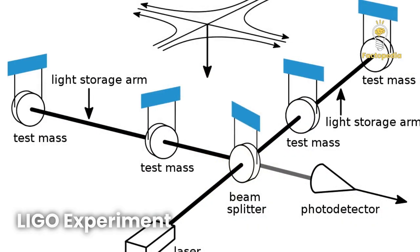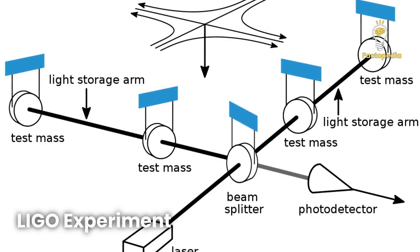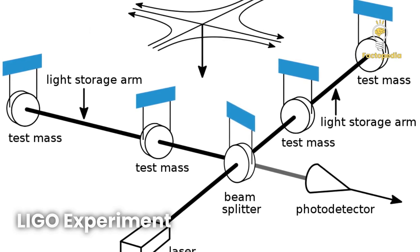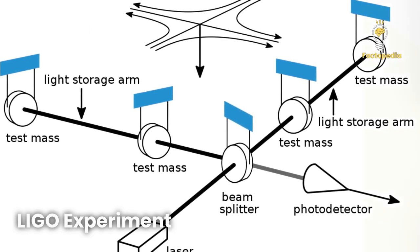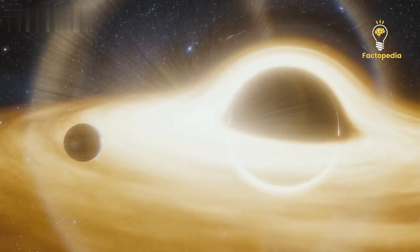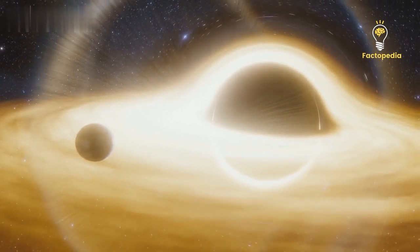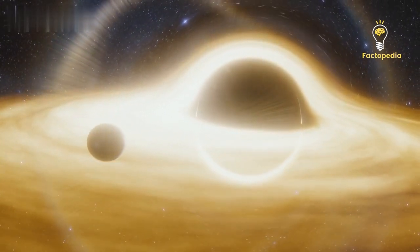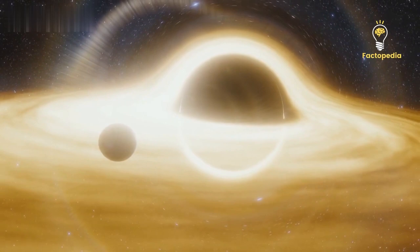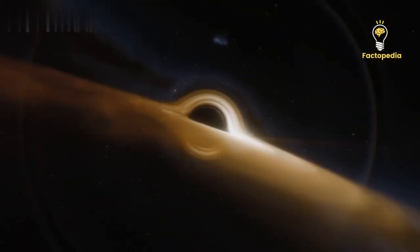You might be wondering, didn't we already detect gravitational waves from black hole mergers with the LIGO experiment? Well, here's the thing. Those gravitational waves were from smaller black holes called stellar mass black holes, which result from the death of massive stars. They're much smaller than supermassive black holes.